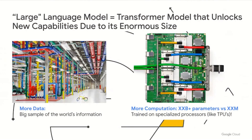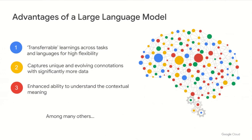A large language model is what you get when you have a highly scalable transformer model and then add significantly more data and more parameters to compute — orders of magnitude larger than standard models, think of tens of billions of parameters. And this scale unlocks new capabilities. There are three advantages I'll highlight: one, transferable learnings across tasks and languages for high flexibility; two, the model captures unique and evolving connotations with significantly more data; and three, enhanced ability to understand the contextual meaning.